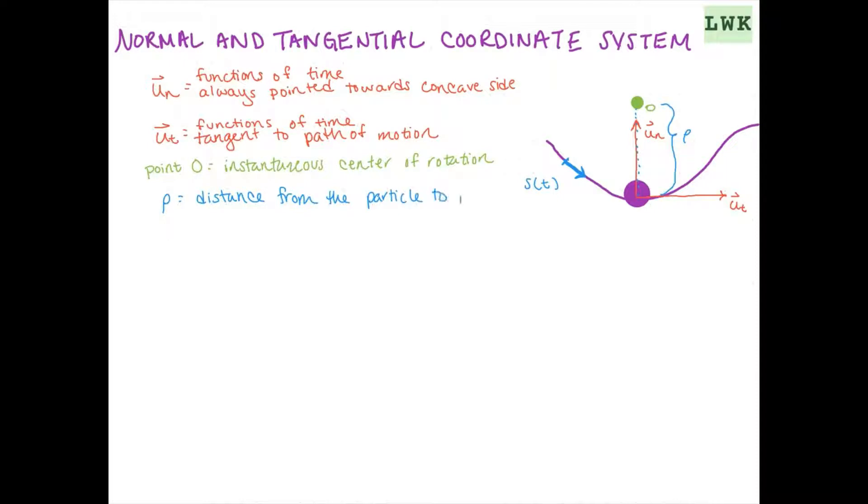So in the normal and tangential system, our position can be defined by this S of T. So our position can be described by S of T. Or if you knew the equation of this line, you could use that as well.